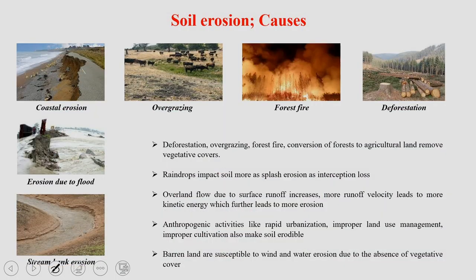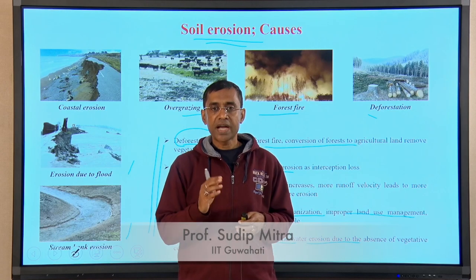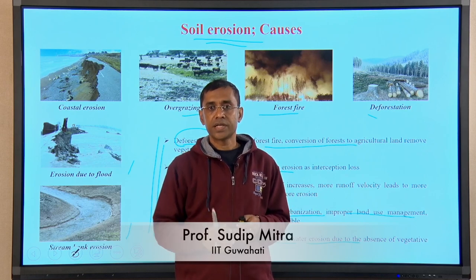The major causes of soil erosion include coastal erosion, overgrazing, forest fire, deforestation, flood, and stream bank erosion. Deforestation is one of the major causes, as is overgrazing, forest fires, and conversion of forest into agricultural land. Heavy rainfall and infiltration, anthropogenic activities like rapid urbanization and improper land use management, as well as barren lands, are also susceptible to wind and water erosion. To reduce this degradation and make our land and soil more resilient, we need to manage these causes significantly.